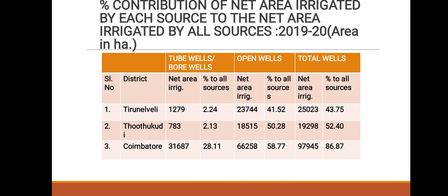Finally, this slide shows the percentage contribution of area net irrigated by each source to the net irrigated area by all sources during the year 2019-20, with the area given in hectares. The districts Thoothukudi, Tirunelveli, and Coimbatore have been shown with the tube wells or bore wells, open wells, and the total percentage of these wells.